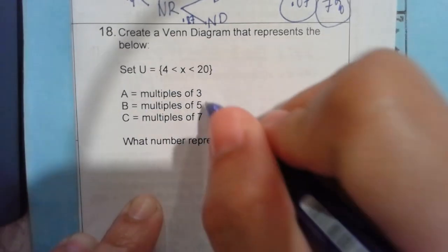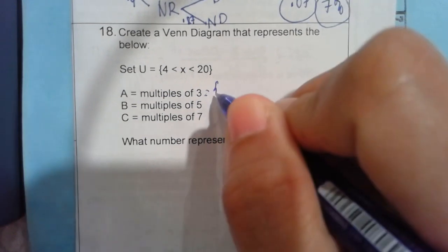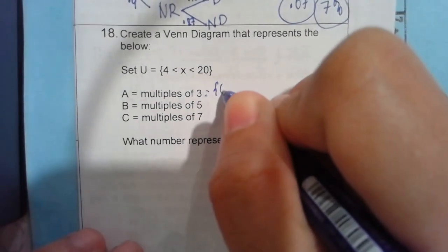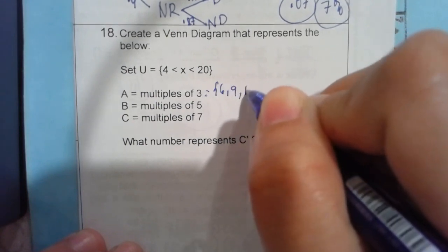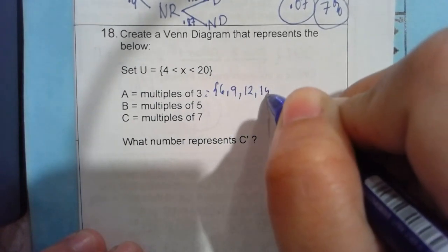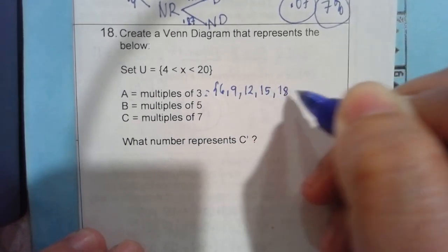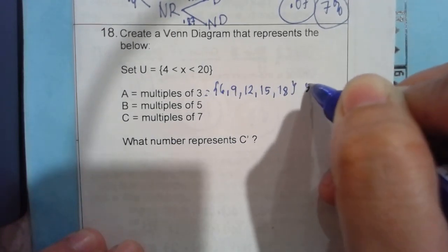Let's start with 6. So 6. We got 9. We got 12. We got 15. 18. A total of 5 elements.